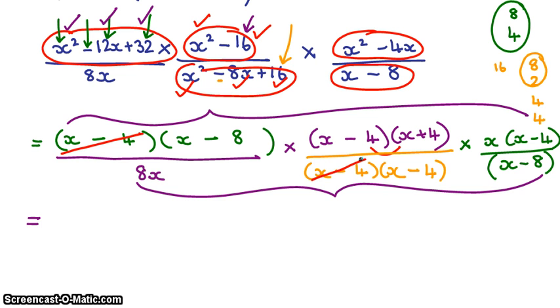I am allowed to cancel any bracket as long as the identical bracket is on the bottom. So x minus 4 and x minus 4, x minus 8, x minus 8, x minus 4, x minus 4.